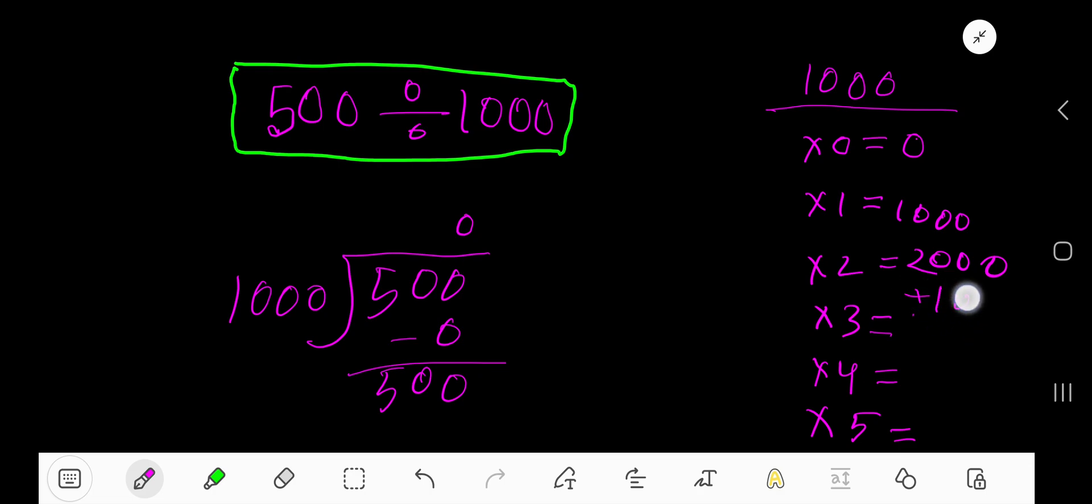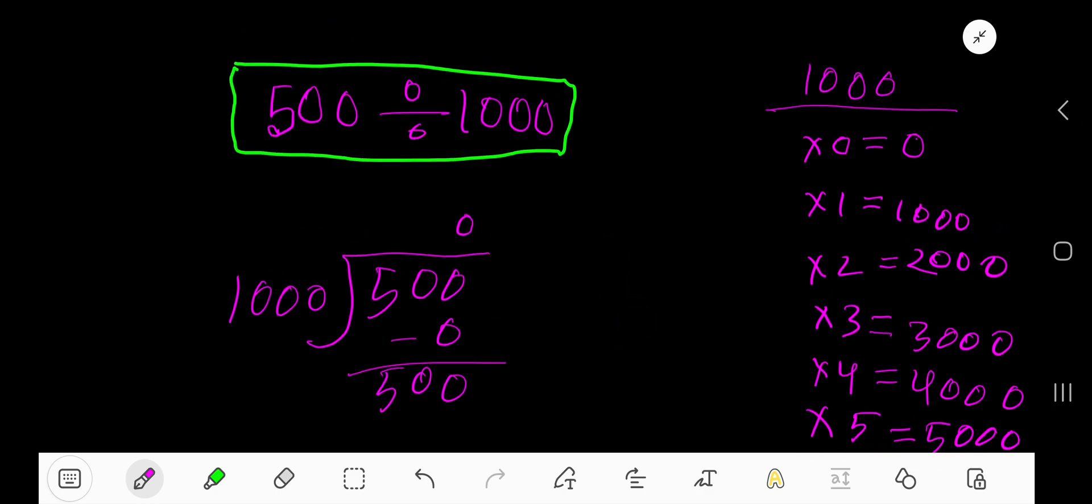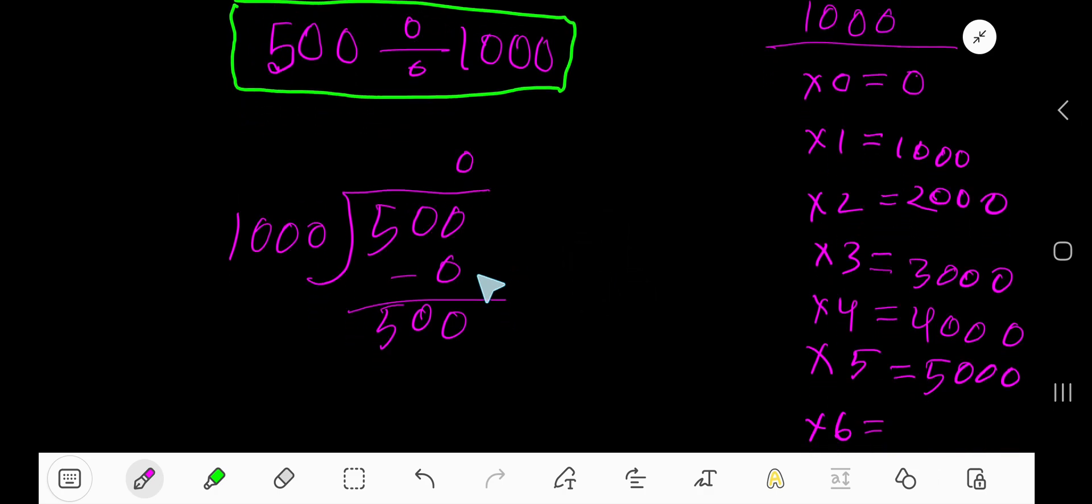Then for 3 you are getting, just add 1000, you are getting 3000, then 4000, 5000. To continue this process, take a decimal and then you are allowed to take any number of zeros. Bring down this zero here, then you are getting 5000.